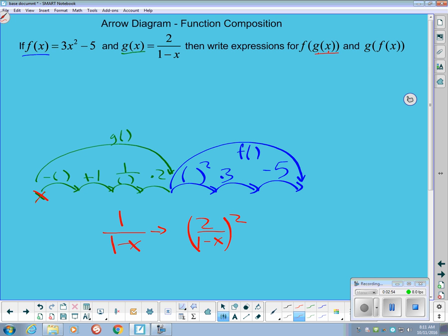That whole thing gets squared, multiplied by 3, and I subtract 5 from that. So this part right here should be f of g of x.